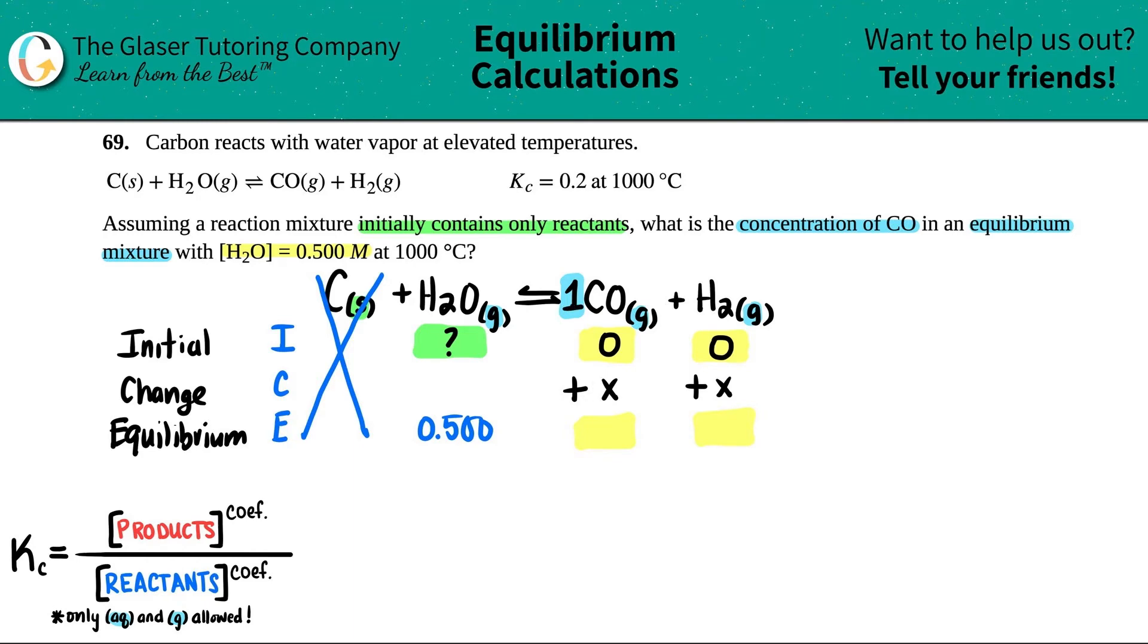And then the same thing for this one. There was a one, so that's why this is plus one X. They have the same number. But let's just say that there was a two in front of here, I would have said plus two X. But we're back with the ones. So zero plus X is just X, and X is on both sides. The equilibrium line is the only thing you care about when you're using your Kc expression. Once again, this is just like a little handy dandy tool for you to organize your thoughts so that you could plug in your equilibrium values into this equation.